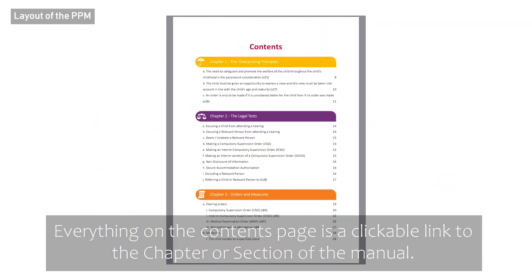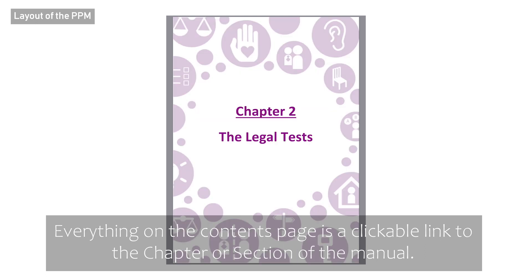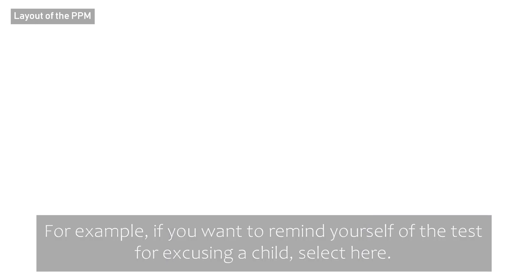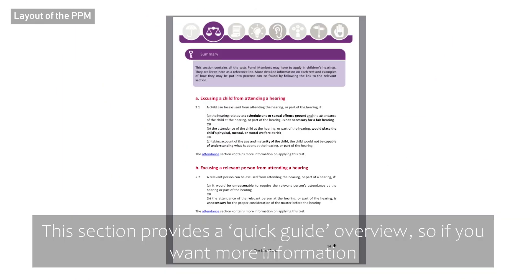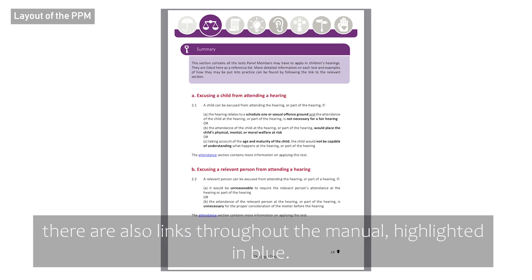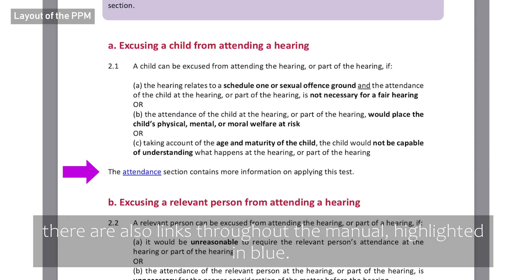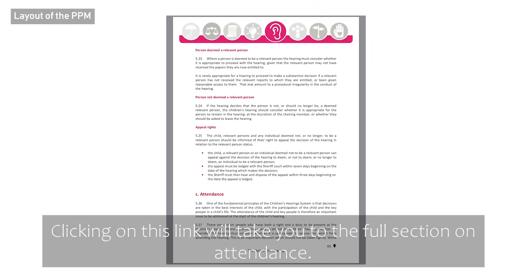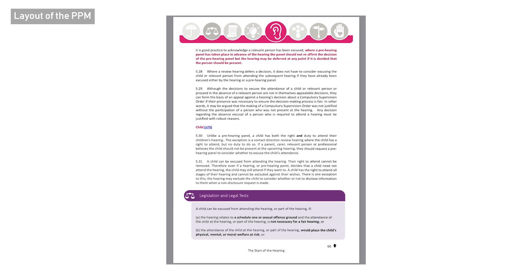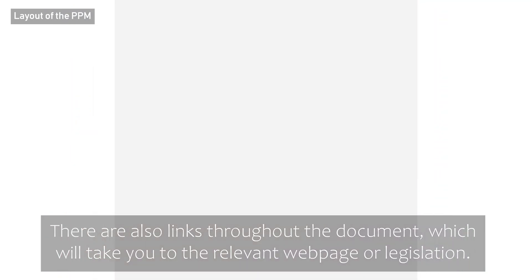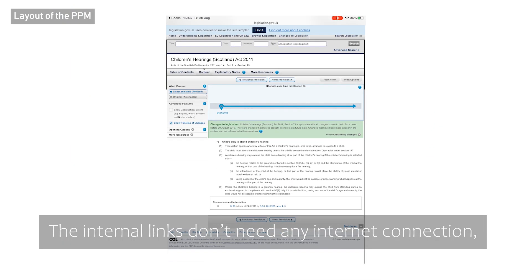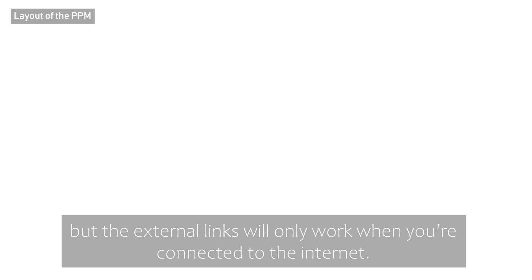Everything on the contents page is a clickable link to the chapter or section of the manual. For example, if you want to remind yourself of the test for excusing a child, select here. This section provides a quick guide overview, so if you want more information there are also links throughout the manual highlighted in blue — clicking on this link will take you to the full section on attendance. There are also external links throughout the document which will take you to the relevant webpage or legislation. The internal links don't need any internet connection, but the external links will only work when you're connected to the internet.